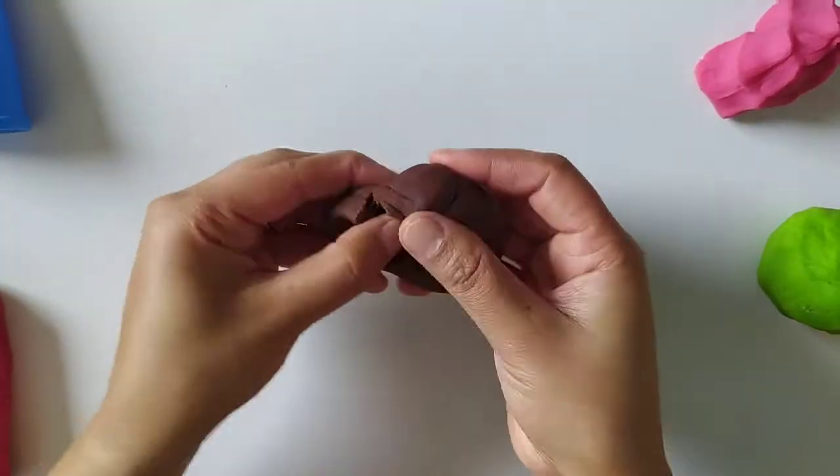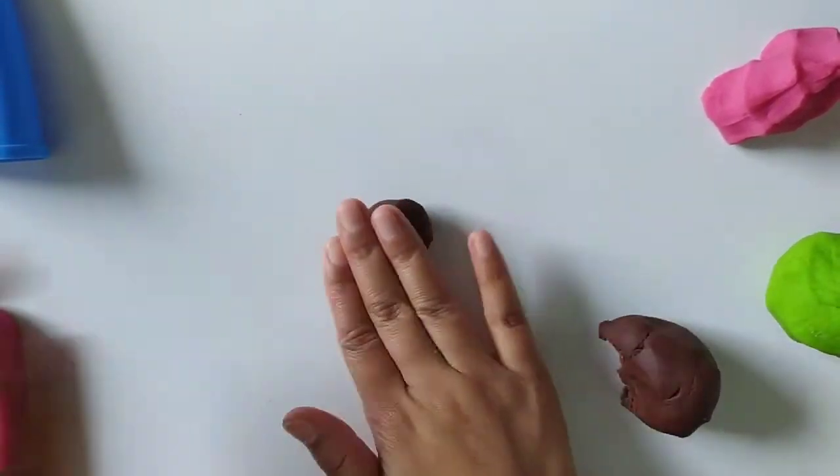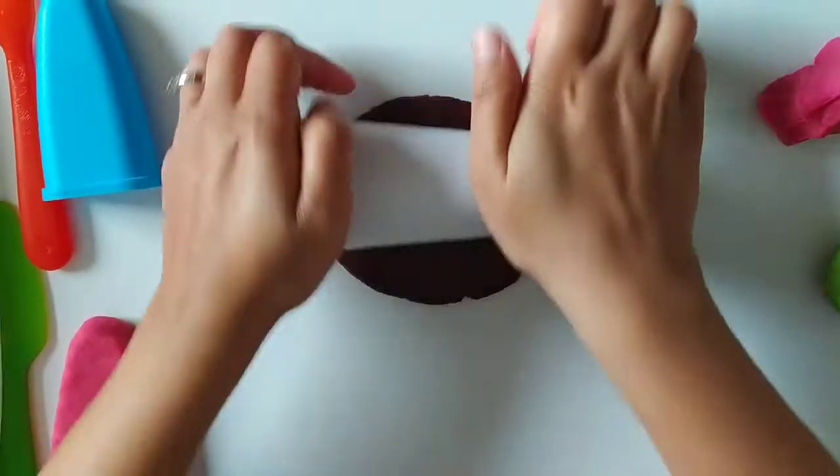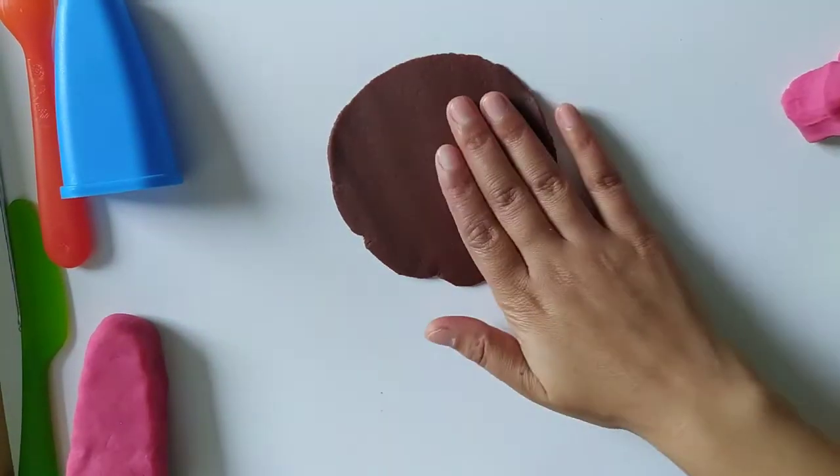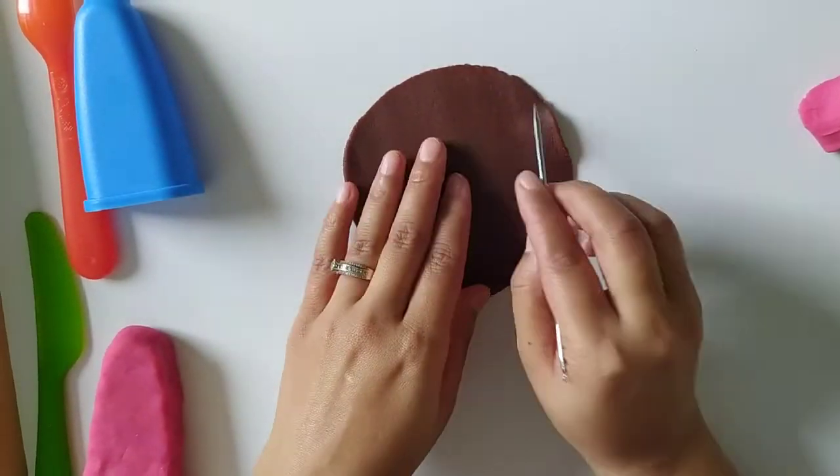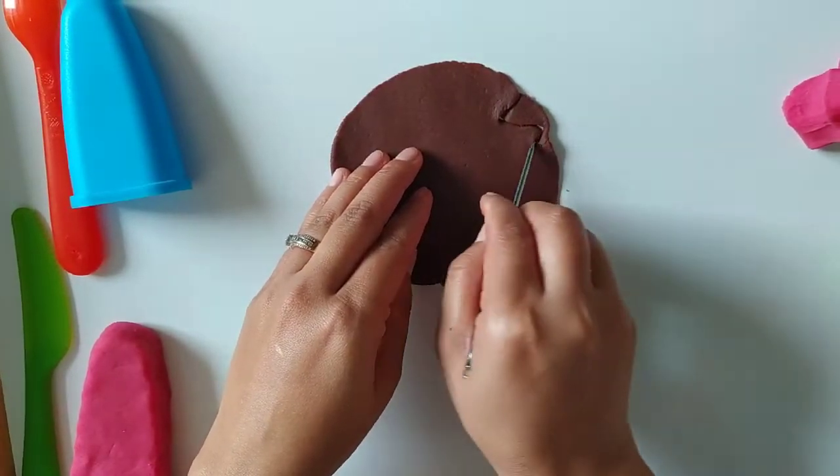It's time to add chocolate ganache on my popsicles. I love chocolate on my popsicles. Let's get some brown play-doh and roll it. Then we will cut it as if it's melting chocolate on the top of my popsicles.